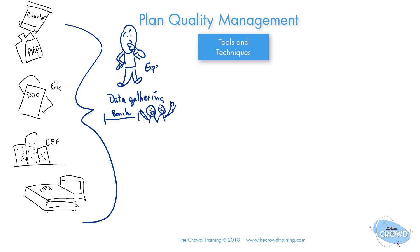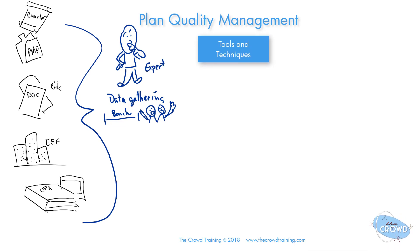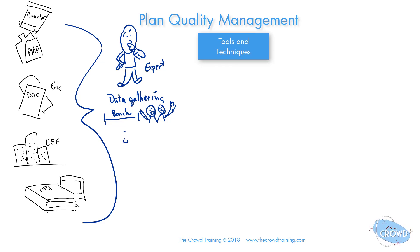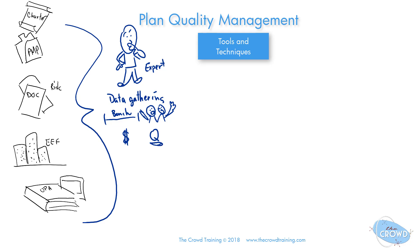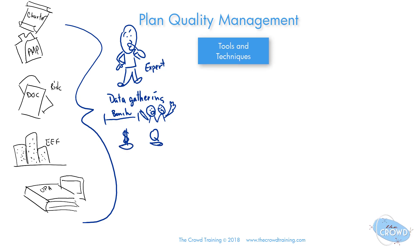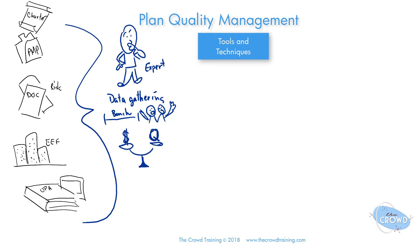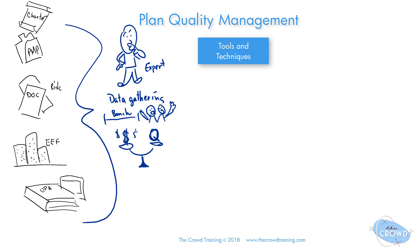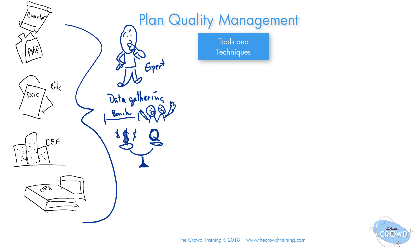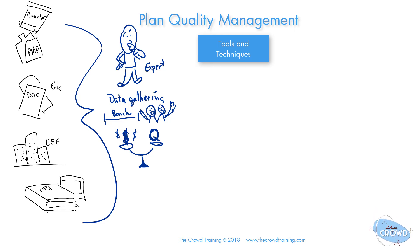Beyond expert judgment, we also have to realize that there is a cost for quality. When we think about that, we have to put it on a scale and evaluate: if we put more quality into something there could be more cost, and we need to assess whether that benefit is worth the value. As we discussed, there's cost for nonconformance and there's cost for conformance.